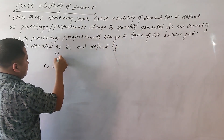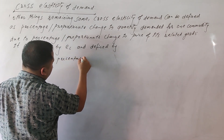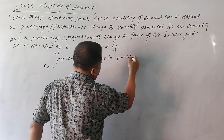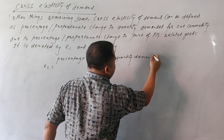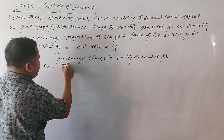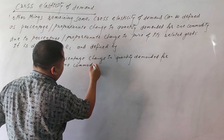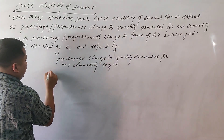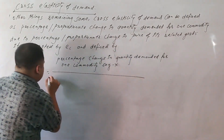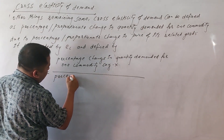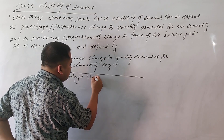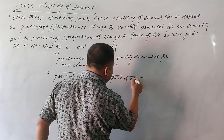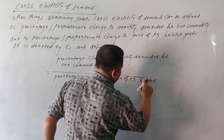EC equals to percentage change in quantity demanded for one commodity divided by percentage change in price of its related goods.